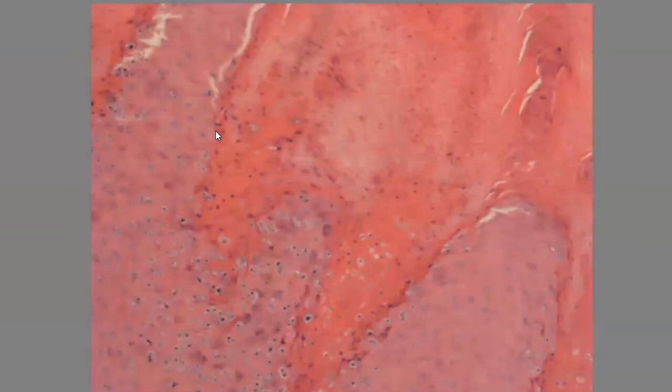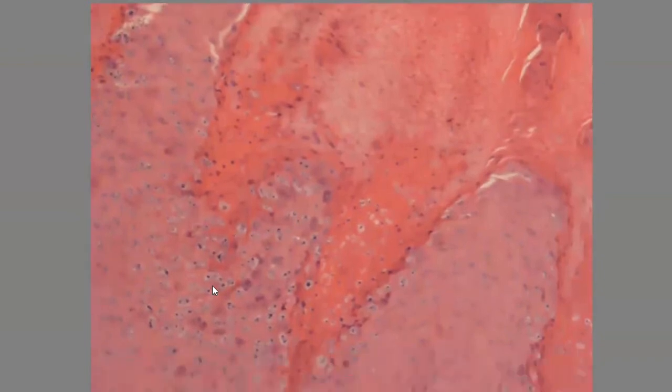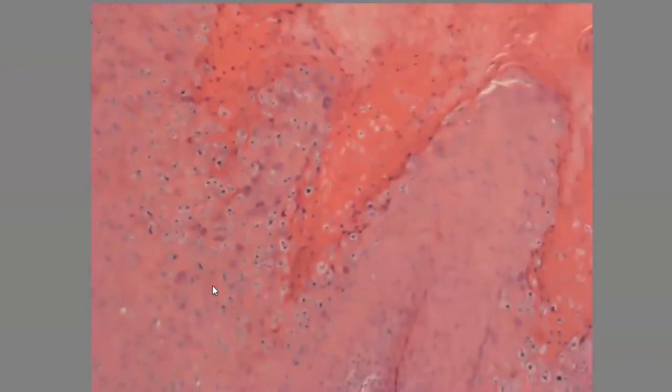So this is the 10x. Again, just to appreciate here the parakeratosis that is here, and also to appreciate these dense basophilic granules that are present in this layer of the epidermis. I will also show you some eosinophilic granules, but maybe it's more evident on higher magnification.